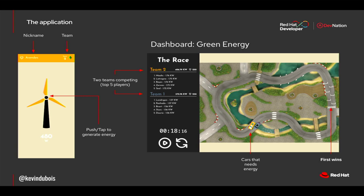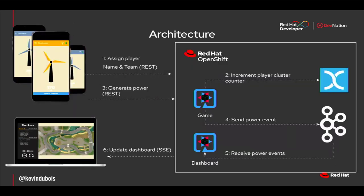Every time you tap, you create a REST request that gets sent to a Java backend. There's a Java stack called Quarkus which starts up really fast with a very small footprint — definitely a really cool stack. Every time there's an event — so you tap — it goes into Kafka, and on my dashboard I'll ingest those results. That's how we're going to power the cars.